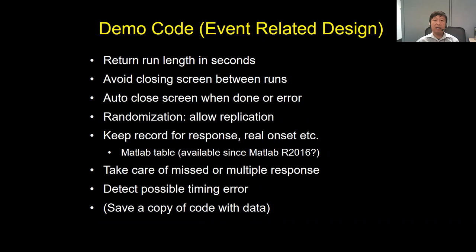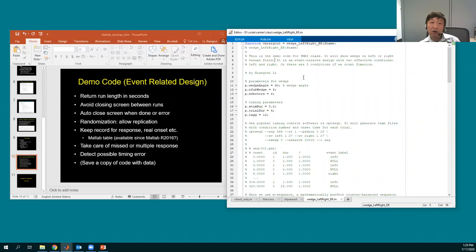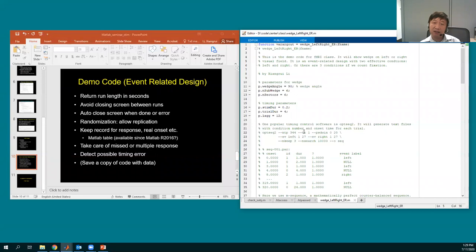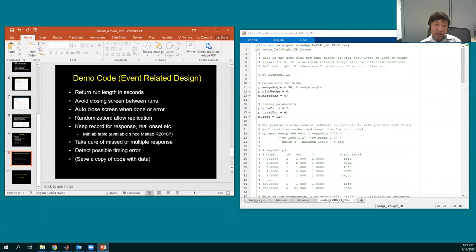Here's the code I sent to you. I wrote a demo code with a lot of comments, so it could be helpful. Without the comments, it might be around 80 lines — not that terrible. The first thing is the demo code returns the run length in seconds. Typically an experiment won't return anything, but here it returns the run length so you can tell the scanner operator how many measurements to acquire.